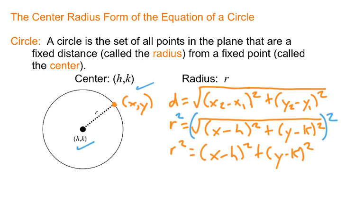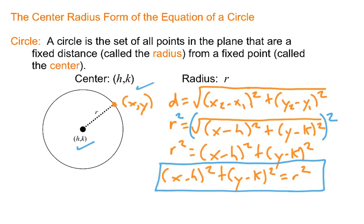And for aesthetic purposes, we reverse the two sides of that equation. And if you've already read in the book and seen this, voila, we have what we call the center radius form of the equation of a circle. That's where it comes from, simply from the definition and the distance formula.